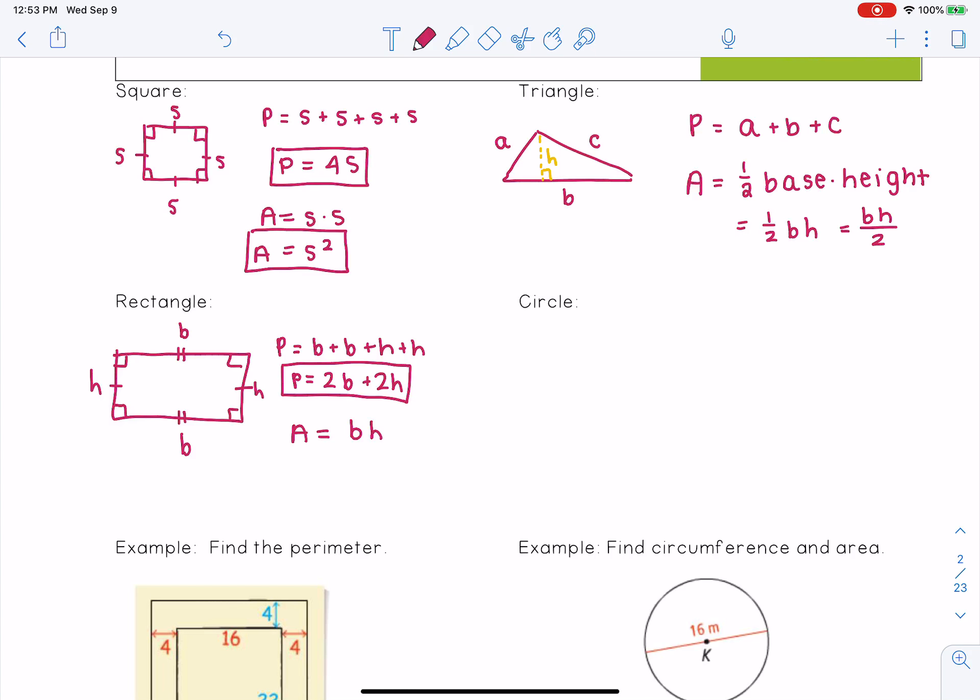Last up, circles are a little bit different. So for a circle, we have a radius. And instead of calling it a perimeter, we call it circumference. So our circumference is 2 pi r. And if you remember, the diameter is twice the radius, or 2r, so we can also say this is pi d. Our area is pi r squared.